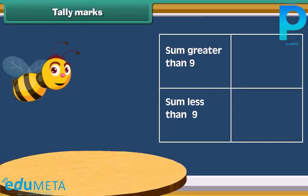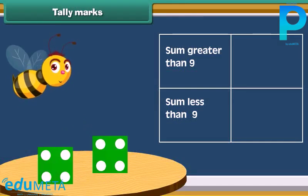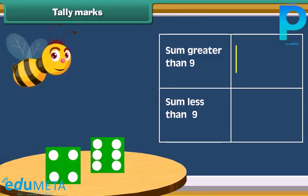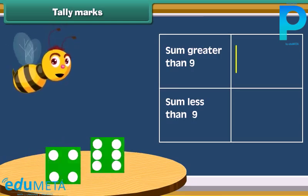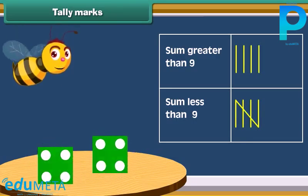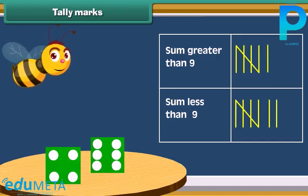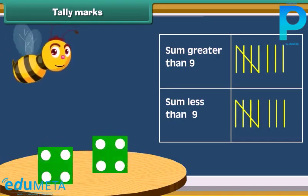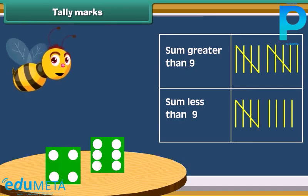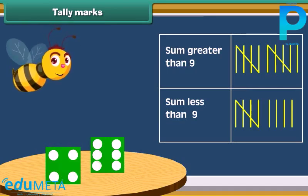Now let's do an activity. Take 2 dice, throw both the dice together and note how many times the sum of numbers on both dice is greater than 9. Also note the number of times the sum is less than 9. Do this activity for 20 times and mark in the table each time. So we see that marking helps us to record data. These are called tally marks.